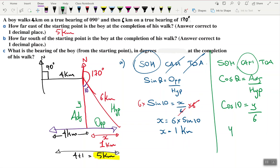And so y would be equal to 6 times cos 10, which is 5.9 kilometers. I'll just round this up for simplicity, that's 6 kilometers.